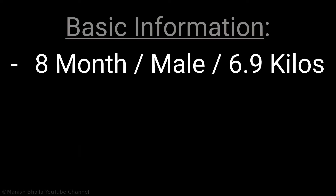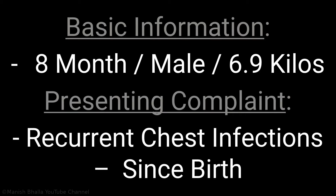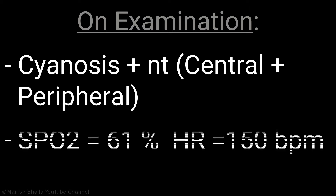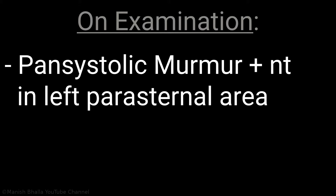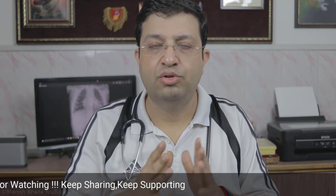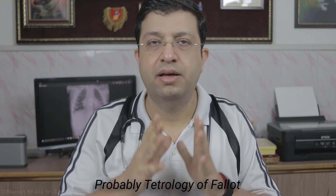An 8-month-old male child weighing 6.9 kilos presented with complaint of recurrent chest infections since birth. On examination, both central and peripheral cyanosis are present. Saturation in room air is 61% and heart rate is 150 beats per minute. A pansystolic murmur in the left parasternal area is present. Based on presenting complaint and examination findings, a diagnosis of cyanotic congenital heart disease is made. The next rational investigation to be ordered in this case is a chest X-ray.